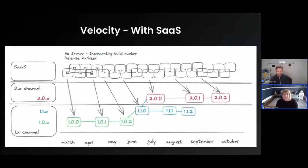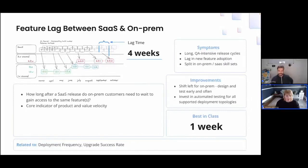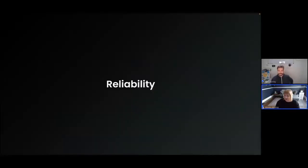If you're a software vendor who delivers through both SaaS and on-prem, you'll want to consider the velocity between those two releases and how long your on-prem customers have to wait after a SaaS release to gain access to the same features. That feature lag between SaaS and on-prem is a core indicator of product and value velocity. Best in class is about one week between the two.